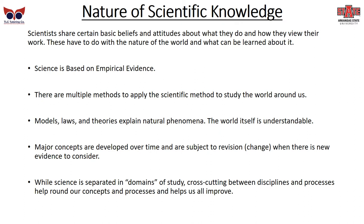Science looks different now than it did in the 1960s, and concepts are developed over a long time and can change. While science is separated into domains of study — different disciplines like botany, chemistry, and physics — cross-cutting concepts move between disciplines and processes, helping round out our understanding. That's one of those great advantages of why science can be so powerful.